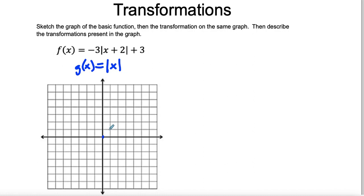Remember, absolute value just makes the shape of a V because it's the distance from zero. So even if it's negative one, the absolute value is one. Your graph is going to look like this, and then we have the other side here. So here's our basic function, and you always want to graph that first.